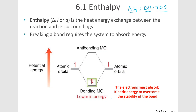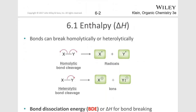Breaking a bond requires the system to absorb energy. If we form a bond, these electrons go together to form a bond, and the bond is lower energy than the individual electrons. So we gain something from forming that bond in the form of a lower energy state. If we break that bond, we're going to have to put some energy in to break it.